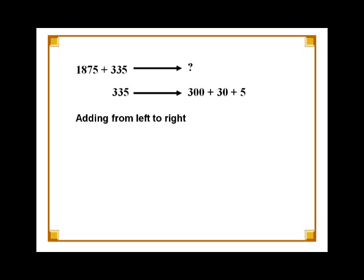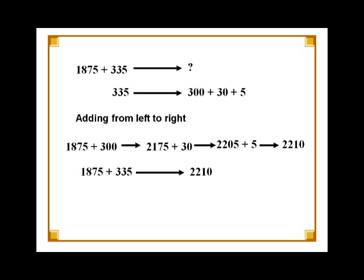The rule for adding from left to right is still the same. Following that, we add 300 to 1875 to get 2175, to which we add 30 and get 2205. Finally, we add 5 to it to get the final answer, 2210. So 1875 plus 335 equals 2210.